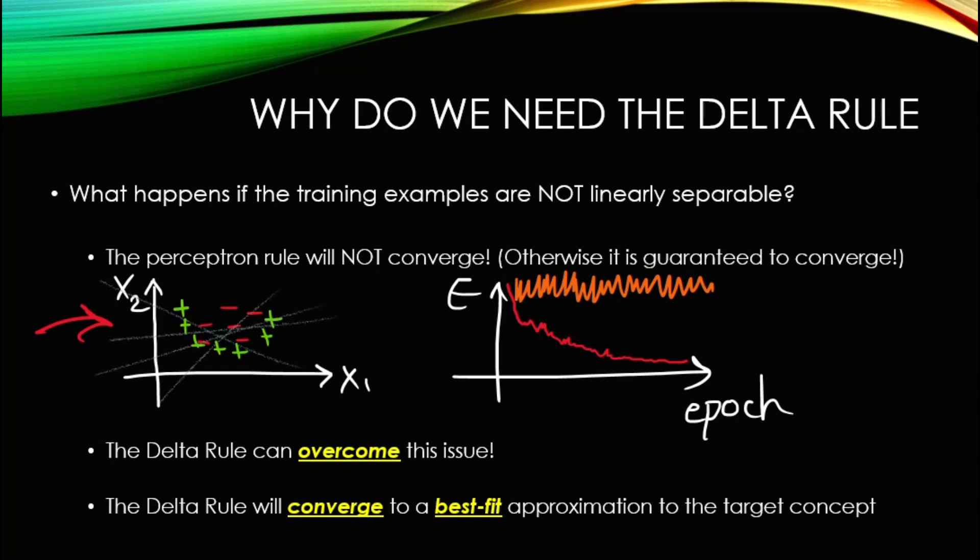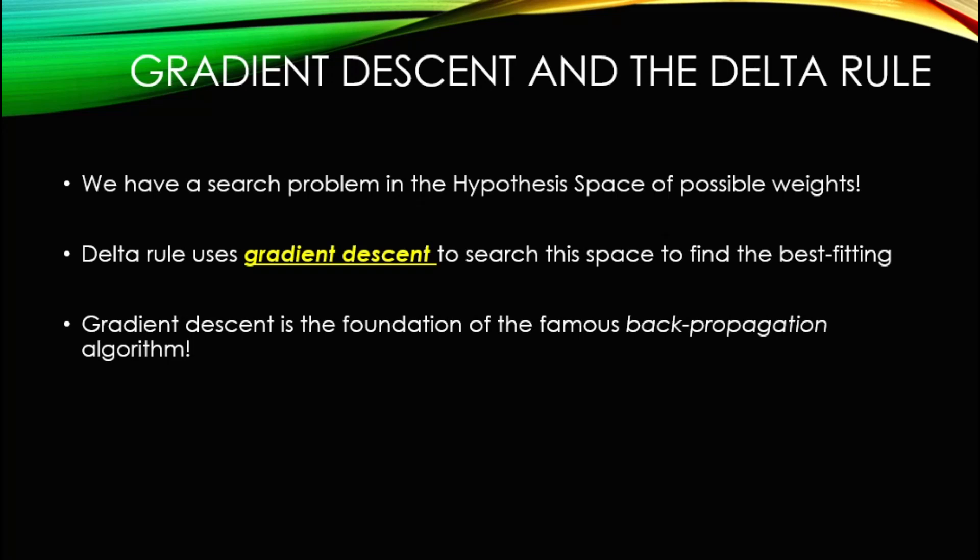So, long story short, we resort to the popular delta rule. One of the reasons the delta rule is applicable under these circumstances is that the famous gradient descent algorithm is tightly related to the delta rule, and gradient descent is actually the basis of the other famous algorithm — the backpropagation algorithm — which is the very foundation of training a neural network.